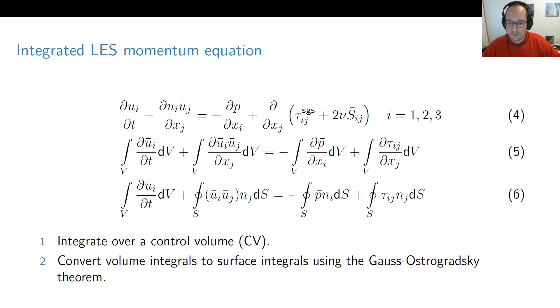Gauss-Ostrogradsky theorem can be applied directly to terms which have a divergence in them, leading to surface integrals, but it can also be applied to the pressure gradient term with a simple trick. Basically you also can convert this gradient into surface integral as well.